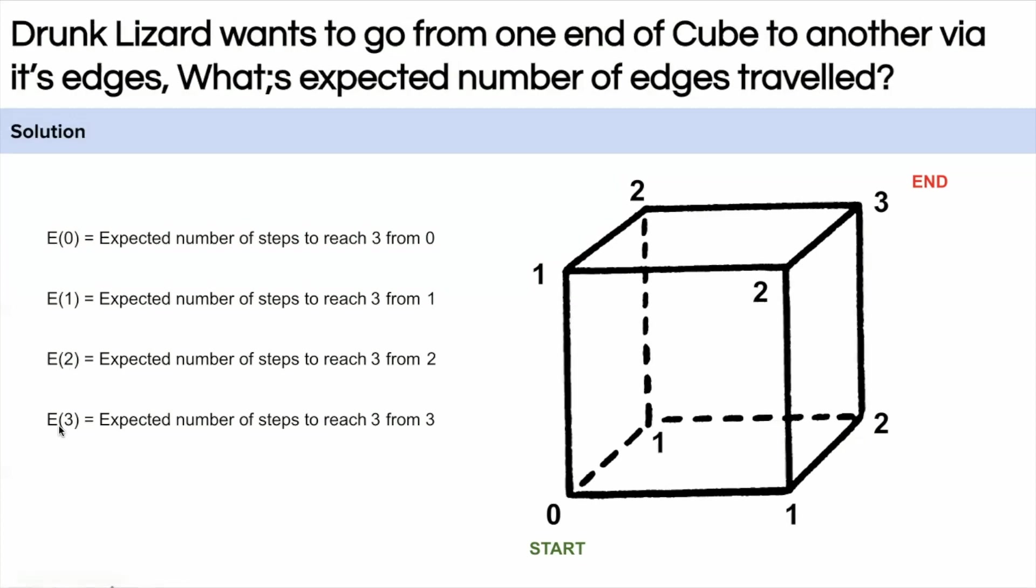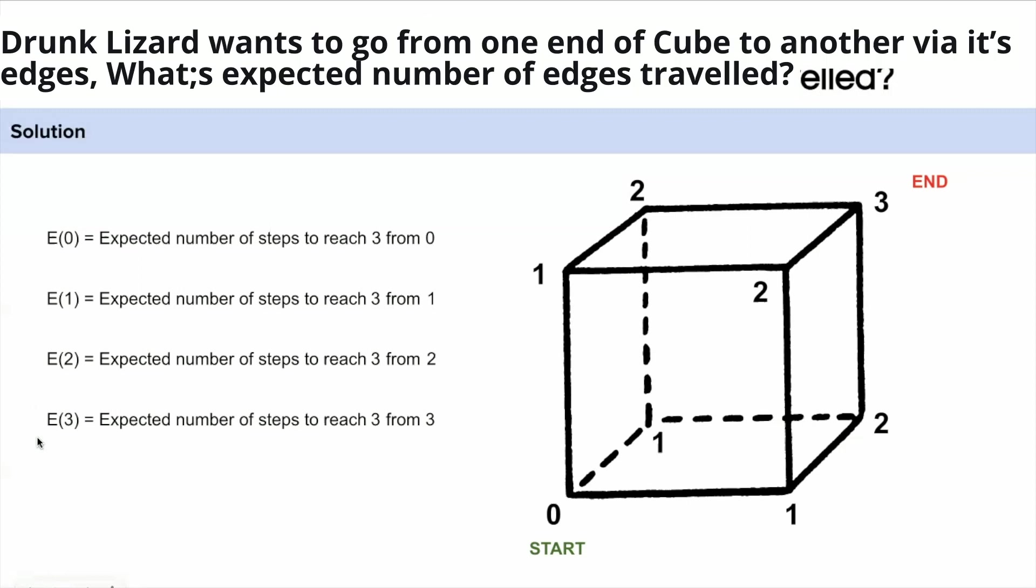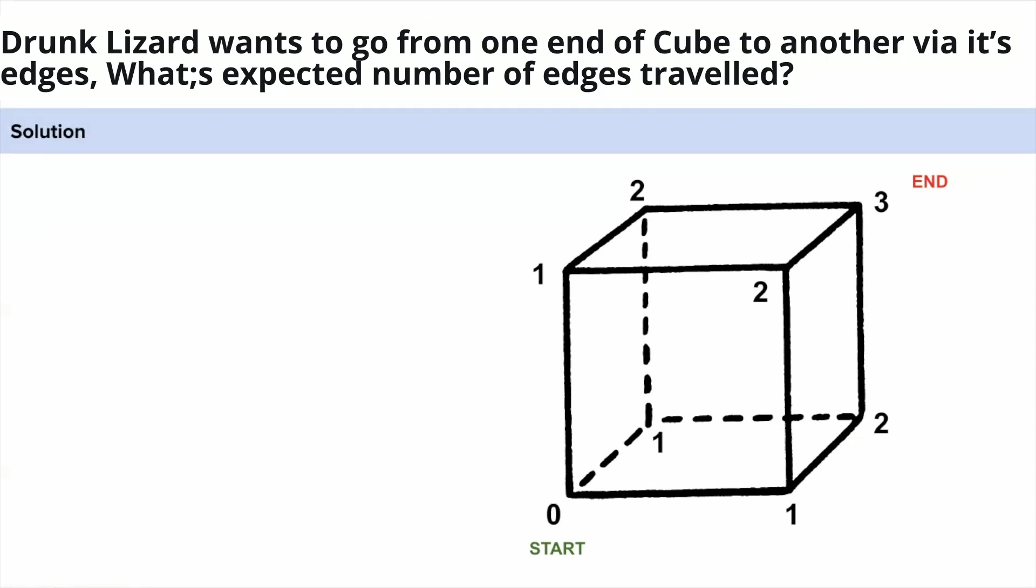Similarly E(3) is the expected number of steps to reach three from point three and E(3) will be zero because the lizard has already reached point three. Now we need to calculate E(0) because E(0) is the expected number of edges which the lizard has to take to reach point three from zero.